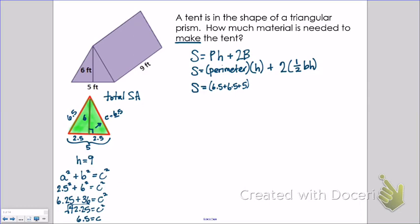So the perimeter is 6.5 plus 6.5 plus 5. Notice I did not use the 6 because that's part of the triangle, that's inside the triangle, it's not part of the perimeter, it's part of the area. I also forgot to cross out the big shape, so let's make sure we don't pay attention to anything on the big shape at this point.